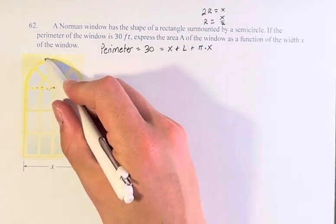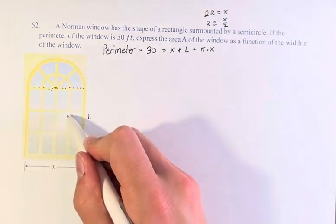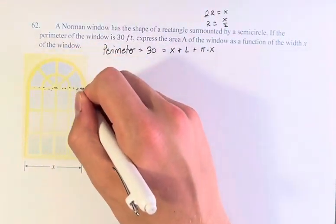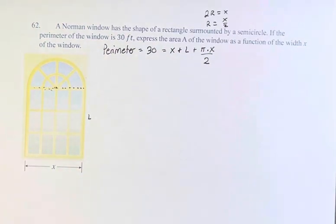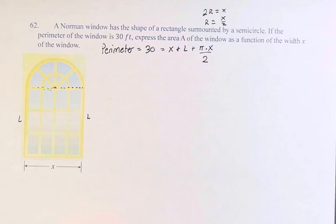However, we only have half of the circle that's exposed. The other half is within the window, so it's not part of the circumference, not part of the perimeter. So only half the circle contributes to our perimeter, so therefore we have to divide by 2. And then finally, we have another L, the same length down the other side.